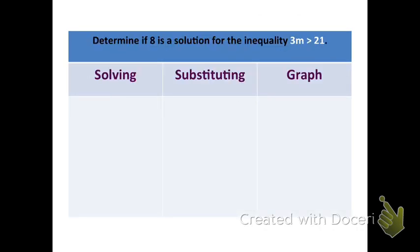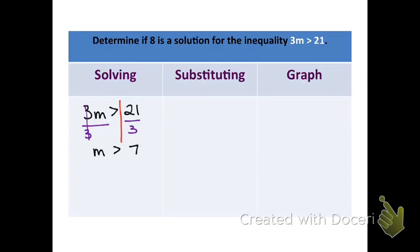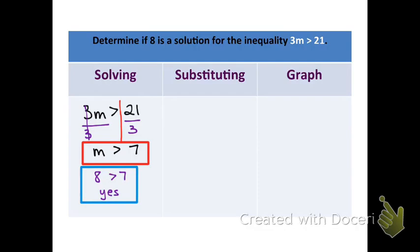Determine if 8 is a solution to the inequality 3m is greater than 21. There are two ways: solving the inequality, or substituting. We'll do both and then graph to confirm. For solving: write the inequality, draw a line down the middle at the inequality sign, then divide both sides by 3. The 3s cancel, giving m is greater than 7. Since 8 is greater than 7, yes — 8 is a possible solution.